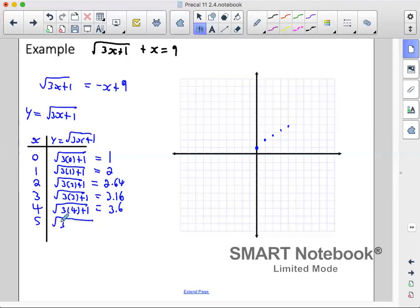Next one is 5. We have 3 times 5 is 15 plus 1. So 16, square root of 16 is 4. Our graph will look something like that.